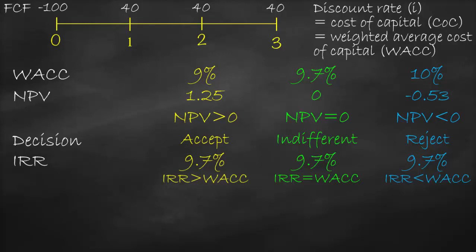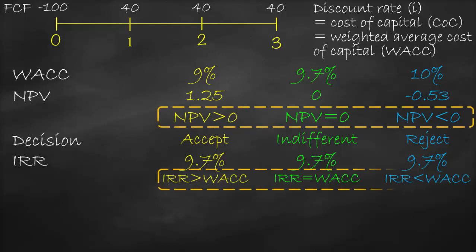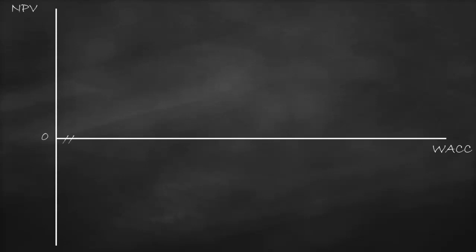Therefore you need to know this relationship between all the capital budgeting tools, because these relationships must hold: every time NPV is bigger than zero, IRR must be bigger than WACC; every time NPV is equal to zero, IRR must be equal to WACC; if NPV is lower than zero, IRR must be lower than WACC. We can represent this relationship in a diagram. Our diagram draws the relationship between WACC, net present value, and IRR. The x-axis is WACC, the y-axis is net present value. The point of intersection where NPV equals zero marks the IRR.